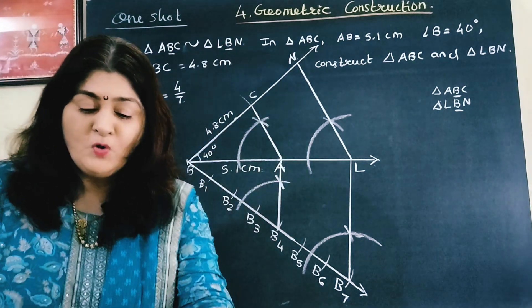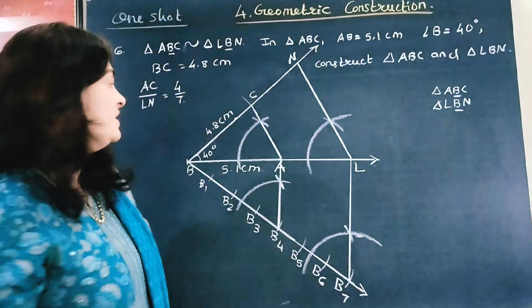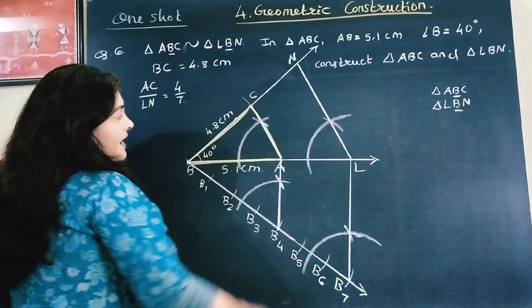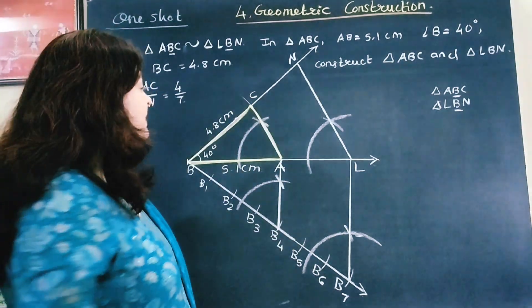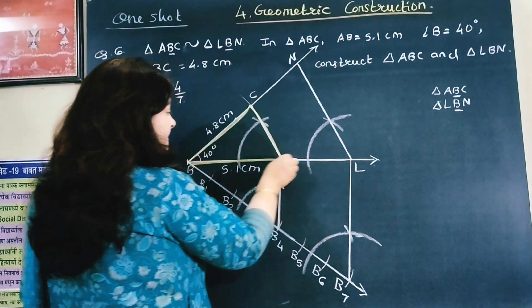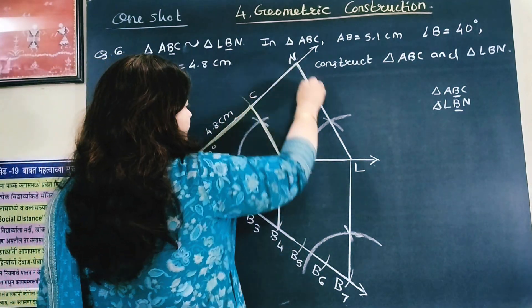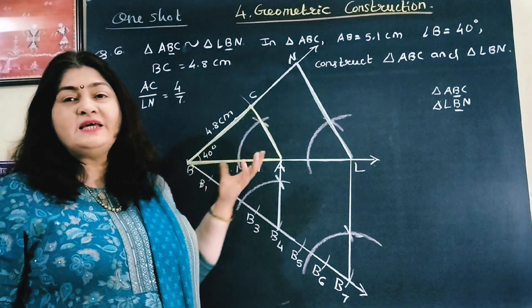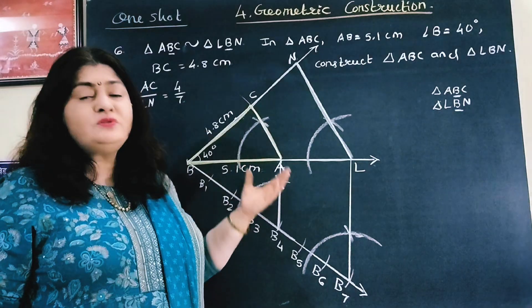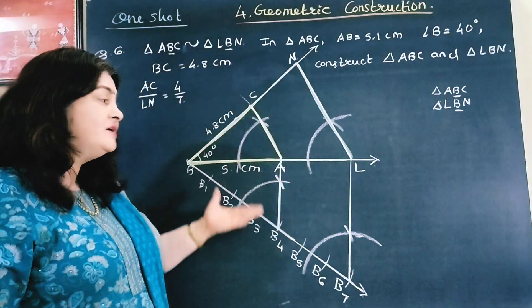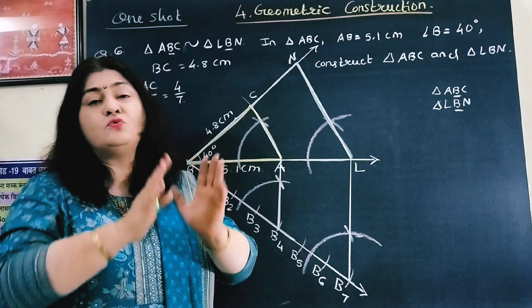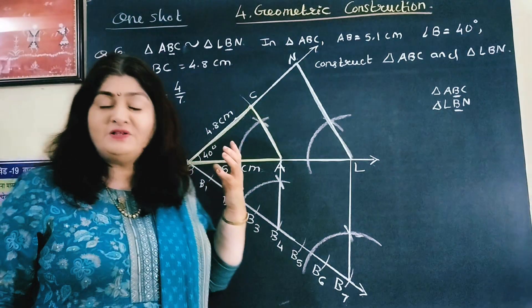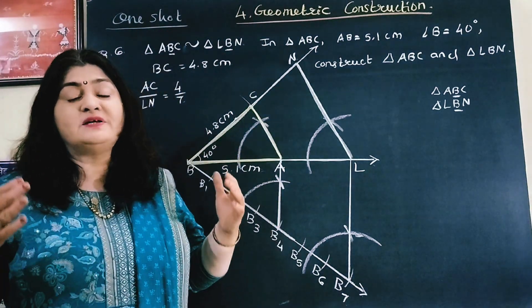I have constructed both triangles. The first triangle is ABC and the second triangle is LBN, both having common vertex B. Follow these steps to draw the correct triangles. This method is only used when there is a common vertex — here B is the common vertex, so we use this method.